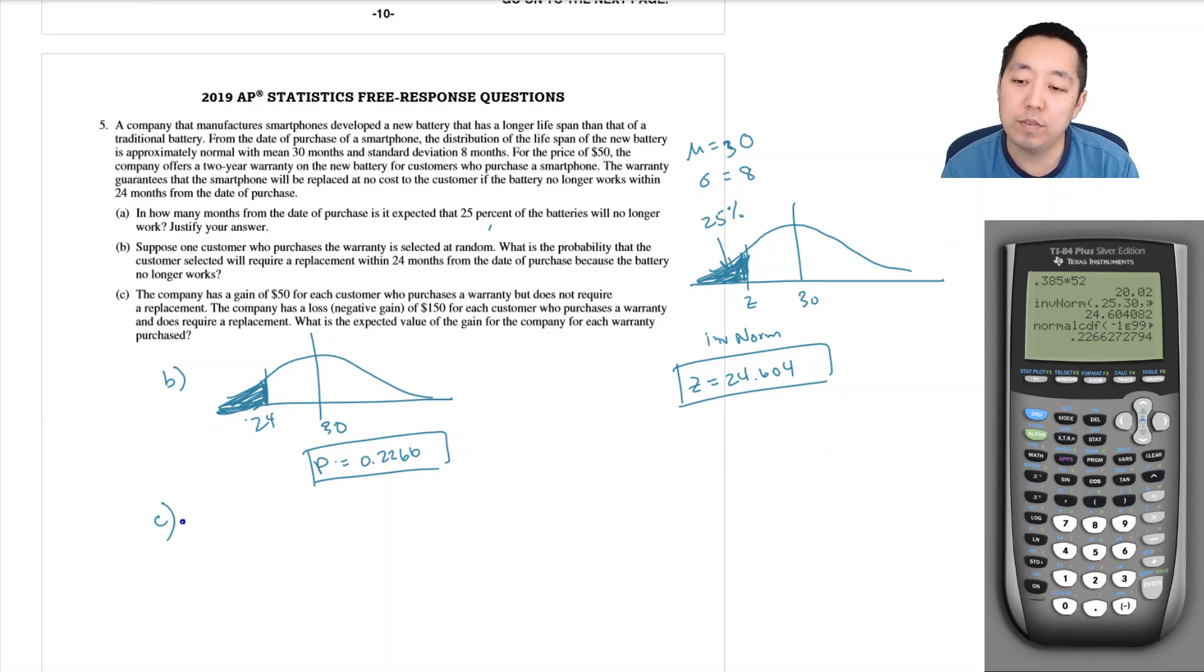The company has a gain of fifty dollars for each customer who purchases a warranty but does not require replacement. The company has a loss of a hundred fifty dollars for each customer who purchases a warranty and does require replacement. What is the expected value of gain for the company? Well, that's simply fifty dollars times the probability they didn't need to be replaced.